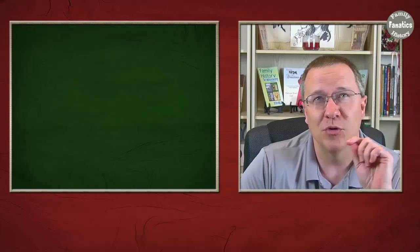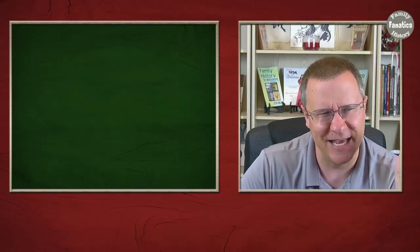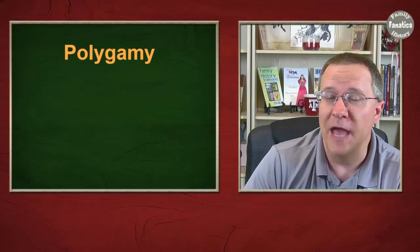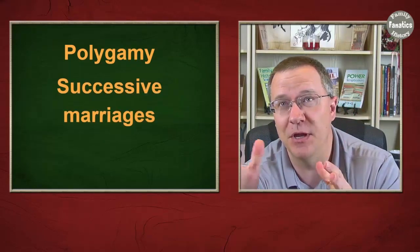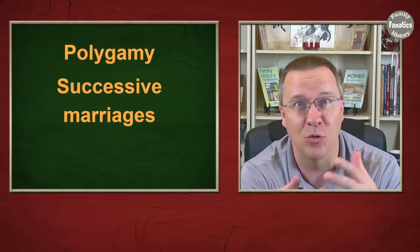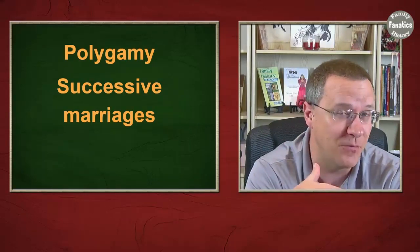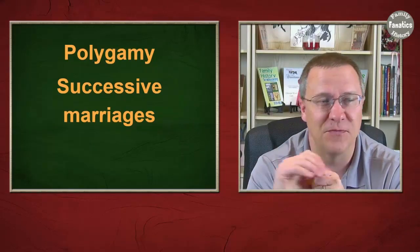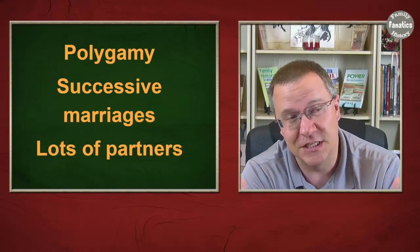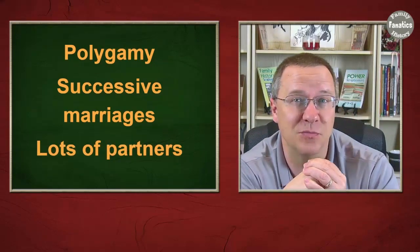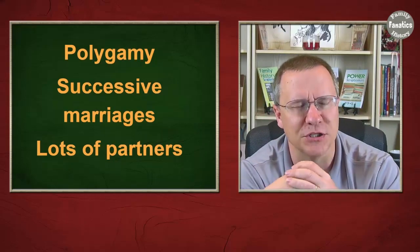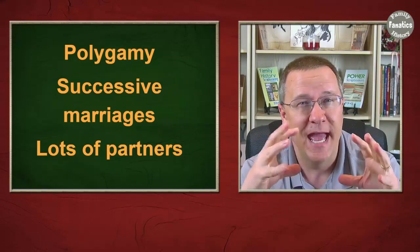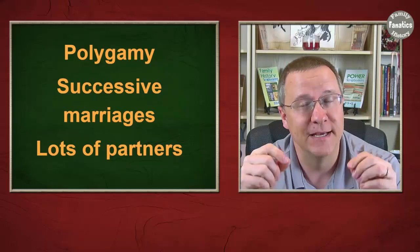The second thing to remember is what does this entail. Polygamy is basically having multiple spouses. That could be the same thing as if you had somebody who their spouse died and they remarried and had more children, so you have successive marriages, or maybe they divorced and married somebody else and had more children. Or if you just ignore marriage completely, there's some people who just have lots of partners and maybe have children with multiple partners. All of these are really in the same category as far as how they're going to affect your DNA.